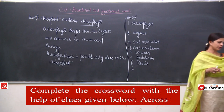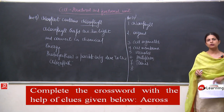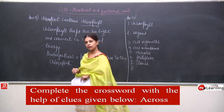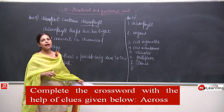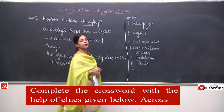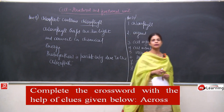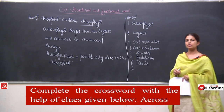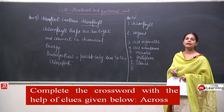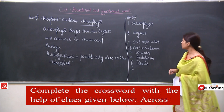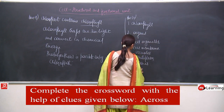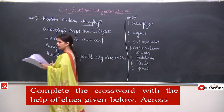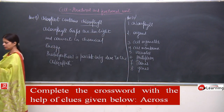Clue 8: units of inheritance present on the chromosome — these are the minute structures on the chromosome responsible for the transfer of genetic characteristics from one generation to another. You look like your parents because of the genes which you inherited from them. The answer is genes. This is the eighth and last clue.